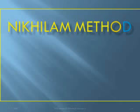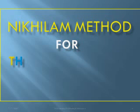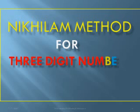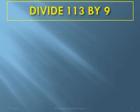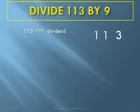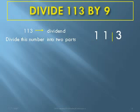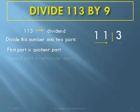Now we see the application of the Nikola method for three-digit numbers. The first example: divide 113 by 9. The dividend 113 is divided into two parts — 11 and 3. The first part is the quotient part, and the second one is the remainder part.